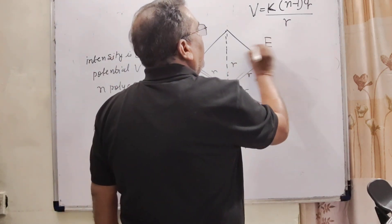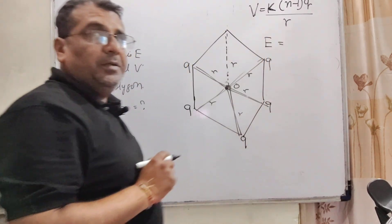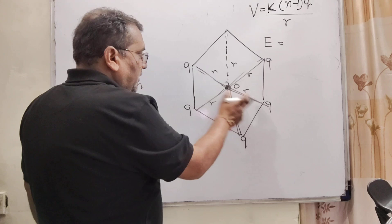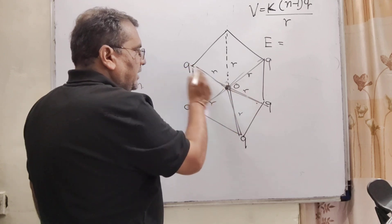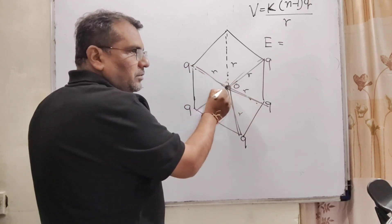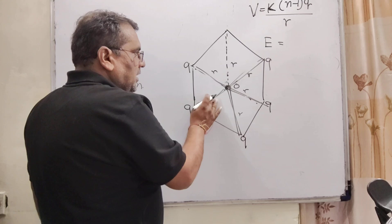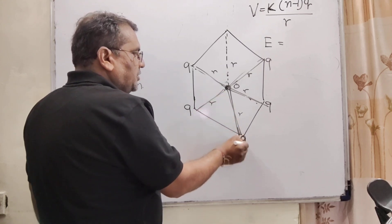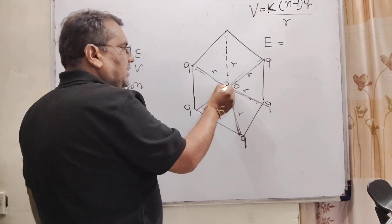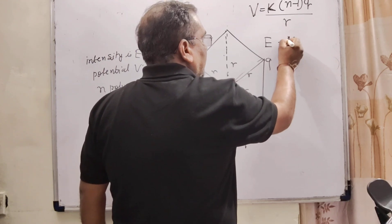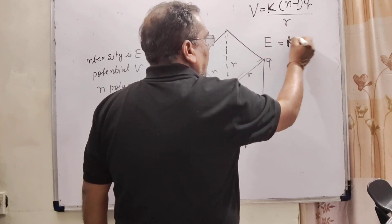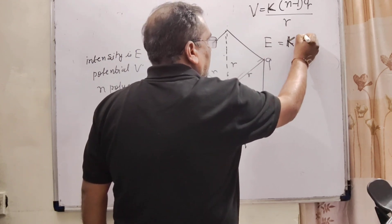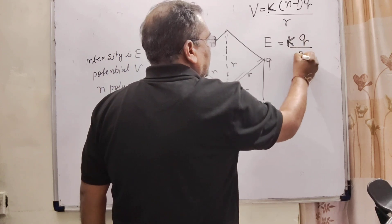So, here and now the electric field. Remember electric field is a vector quantity. And so, therefore, they are each other, their effect becomes zero. Cancel out each other. This cancel out. And only this charge q and due to this q at the center, resultant electric field E equal to k into q by r square.